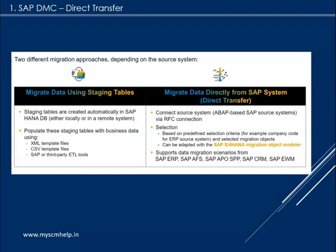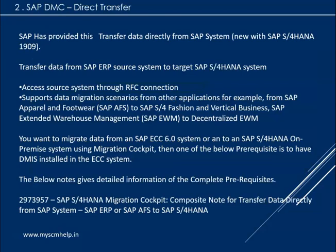The other option offered is to migrate the data directly from an SAP system — a direct transfer. This means if you have an ECC system, from the current ECC system you can push the data to the S/4HANA system. You need to establish an RFC connection. We will look at a high level how these things are performed. This is actually possible only from SAP S/4HANA 1909.